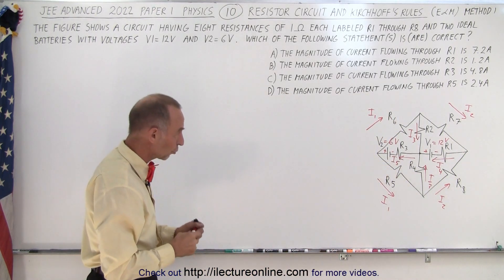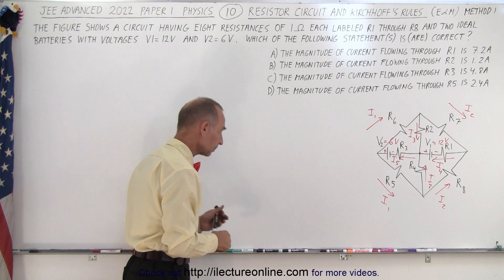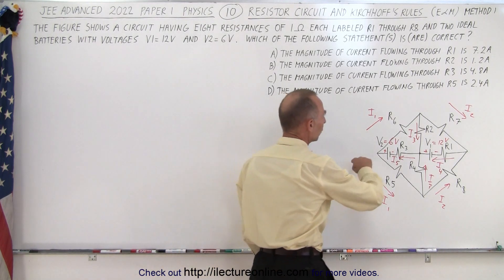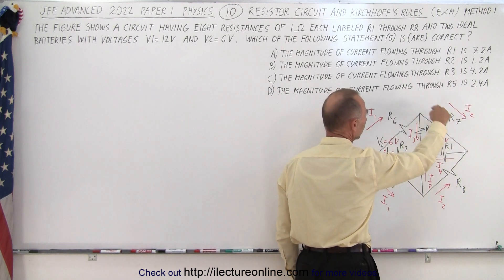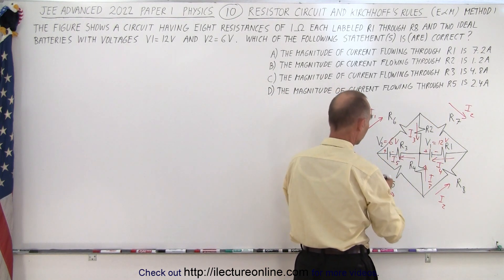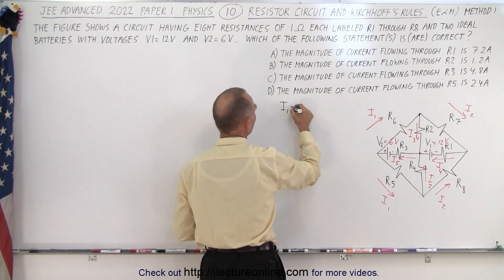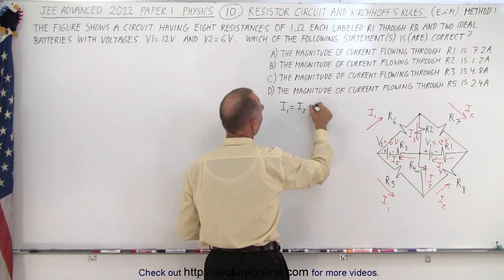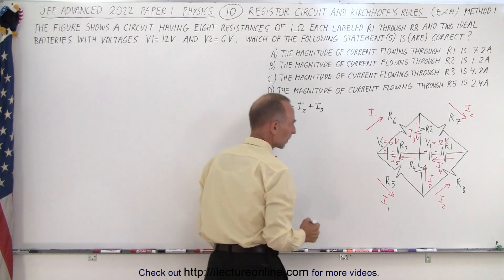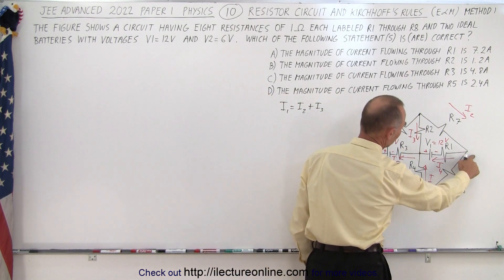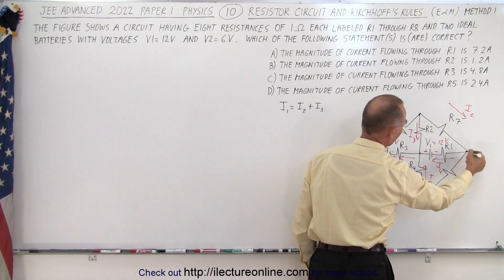Now we're ready to use Kirchhoff's rules. We can say that I1 must equal I2 plus I3 because at this branch point we have one current entering and two currents leaving. So we can say that I1 must equal I2 plus I3. And that works in both directions.